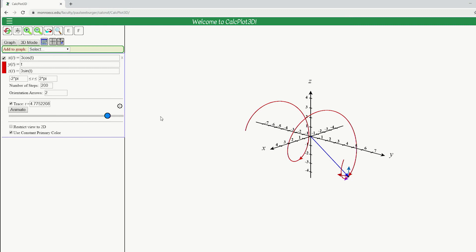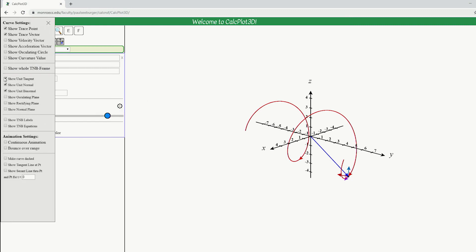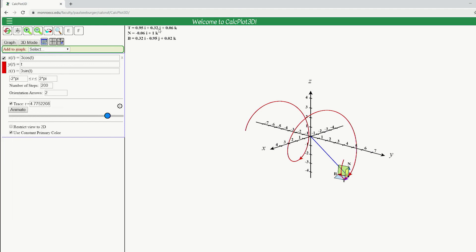We can also go up here to the settings, too. And I can check a few other things here. I can check show the whole TNB frame. It will label those. It's also given us some decimal approximations up here in the corner for the TN and B vectors at a particular T value. And then you can also see these coordinate planes, or the TNB planes, the osculating, rectifying, and normal planes formed by those vectors. And you can kind of watch that also as you drag along there, how that all moves along there.